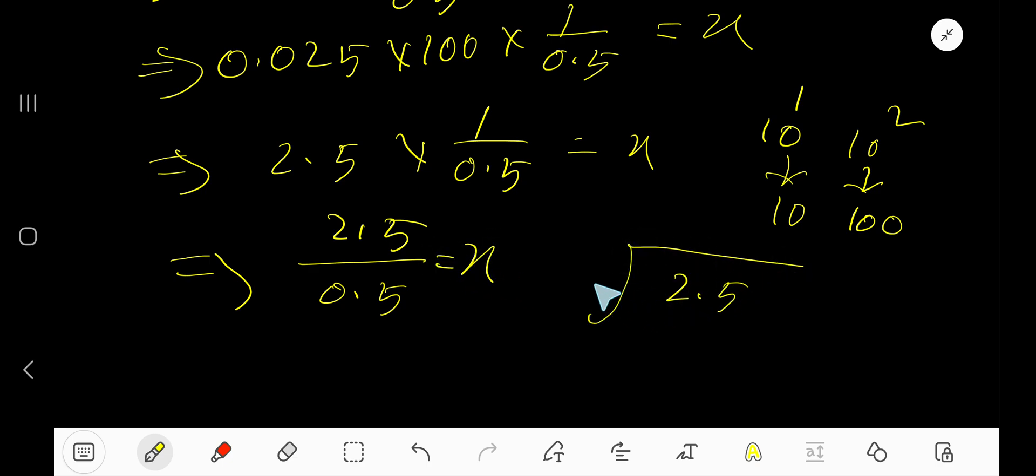Now divide 2.5 by 0.5. We need a whole number in the divisor, so move decimal one place here. You need to do the same thing in the dividend, so we are getting here 25 and here we are getting 5. Divide 25 by 5. 5 goes into 25 five times.